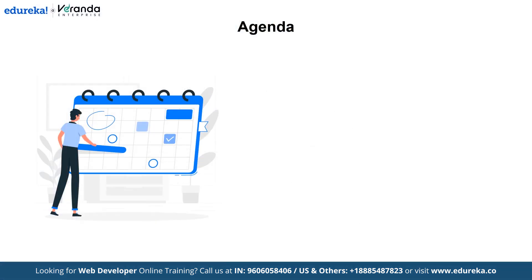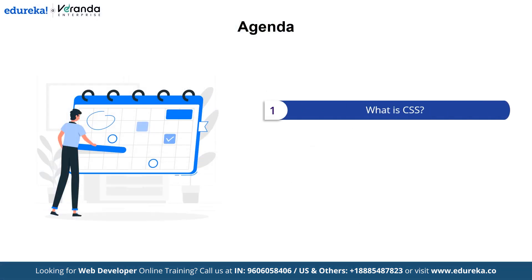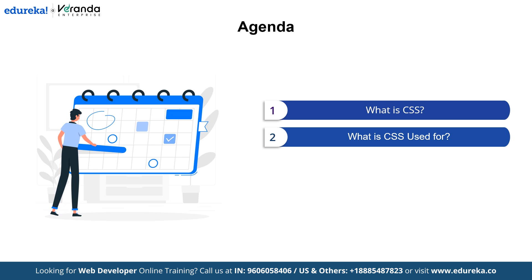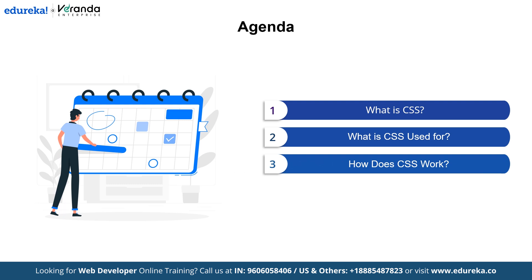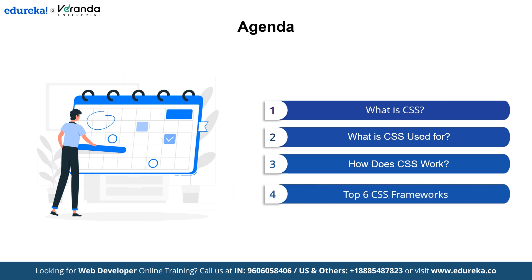Now let's outline what we will cover in this video. First, we will dive into the basics of what CSS is, to understand the fundamental concept of cascading style sheets. Then we will explore what CSS is used for, shedding light on how it enhances your web design and functionality. Next, we will uncover the mechanics of how CSS works, explaining how CSS interacts with HTML to style your web pages. And finally, we will wrap up with our discussion of the top 6 CSS frameworks, giving you an overview of the most popular tools to streamline your development process.